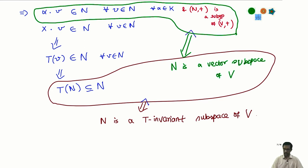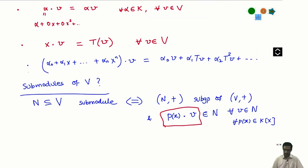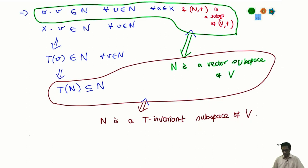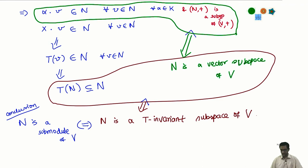You can reverse this entire chain of arguments and conclude that a sub-module is the same as a T-invariant sub-space. The one last thing to check is that if T(v) is in N for all v in N, then a more general polynomial also maps N into N — but that follows because T-invariance implies T²-invariance, T³-invariance, and so on. So the final conclusion is: N is a K[x]-sub-module of V if and only if N is a T-invariant sub-space of V, where T is the operator defining the K[x]-module structure.